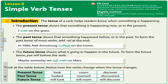Look at the table below. Notice how the verbs change when the tense changes. Think of that verb — that action — look. Here it is in the present. In the past tense, add the -ed; it becomes looked. And in the future, add that word will before it.